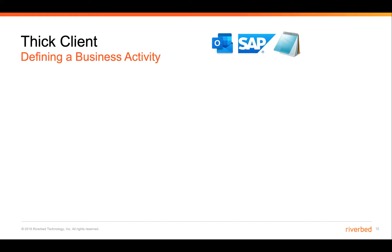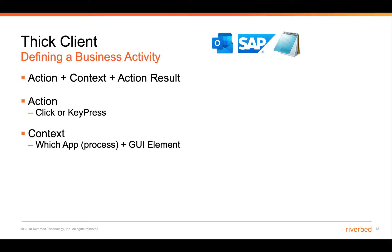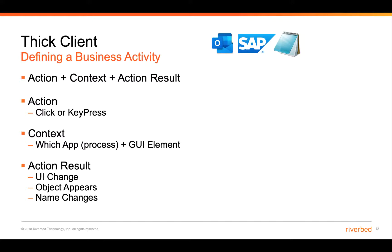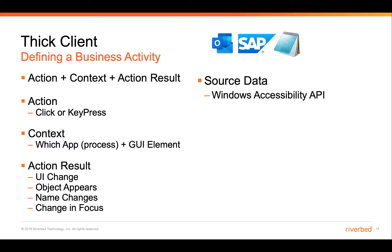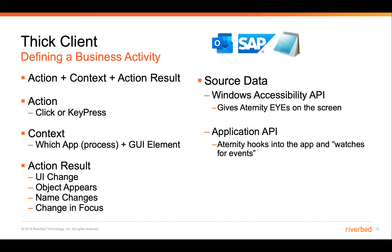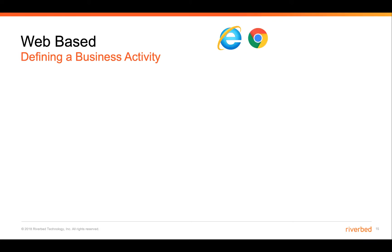When we define a business activity for a thick client application — for example, Outlook, SAP, or even Notepad — we use the action plus the context plus the action result. The action is a click or key press; the context is which application or process, and which GUI element within that application you interacted with. The action result can be things like a UI change, an object appearing or disappearing on screen, a name change, or a change in focus. The primary source data is the Windows Accessibility API — created by Microsoft to allow people with visual impairment to interact with a computer — which Eternity leverages to give it the ability to see the screen. In addition, Eternity can also use the Application API, hooking into the application and watching for events to identify click or key press events as well as action results.